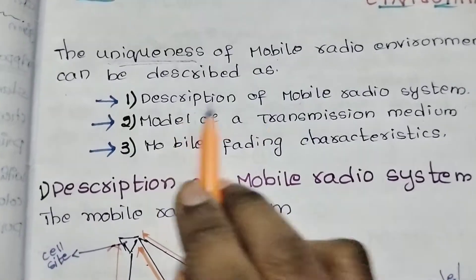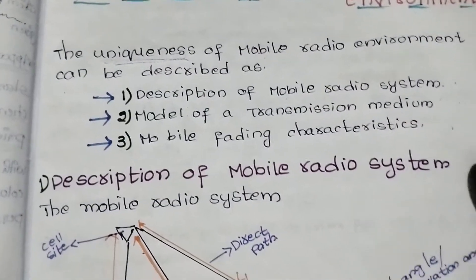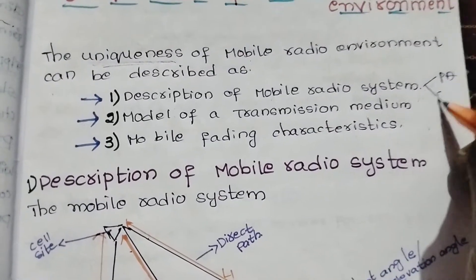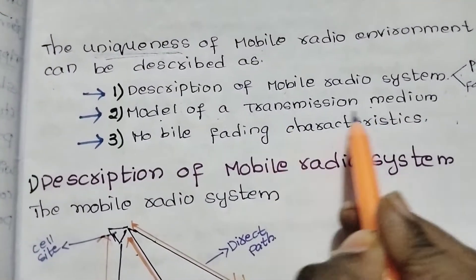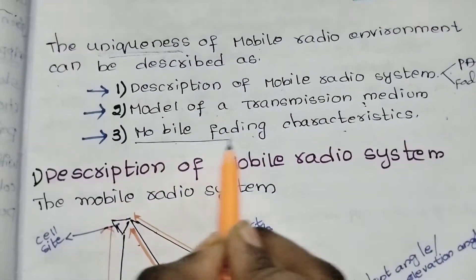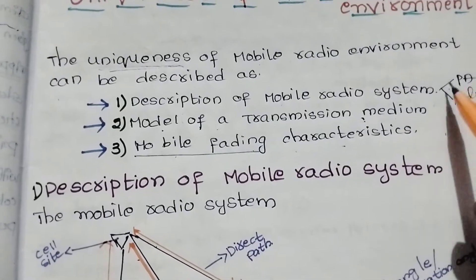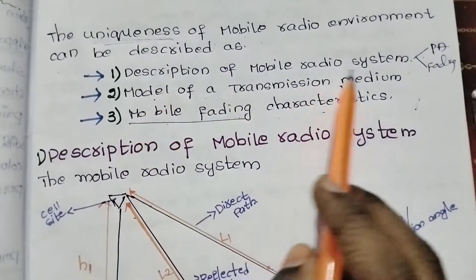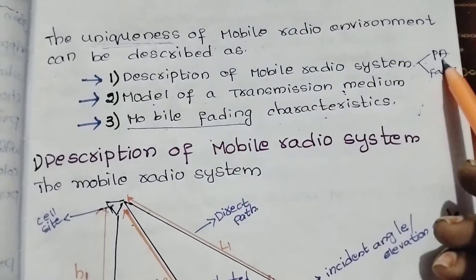The first step is to describe the description of the mobile radio system. We will explain the mobile and cell site, as well as propagation attenuation and fading.